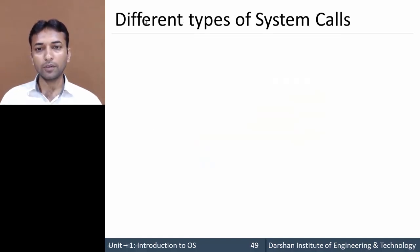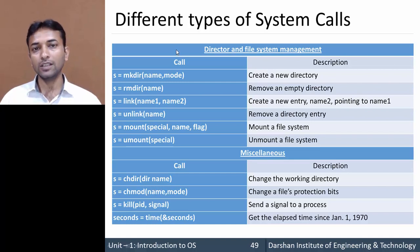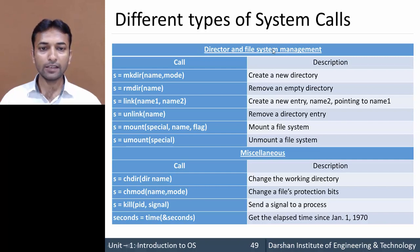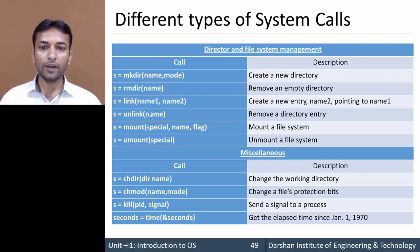Now let us see the different types of system calls. We have divided system calls into different categories depending on the nature of their work. The first category is directory and file system management, which includes various system calls used to manage a directory or a file system.